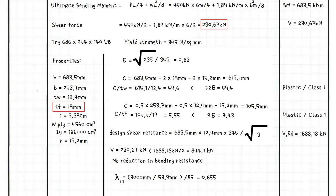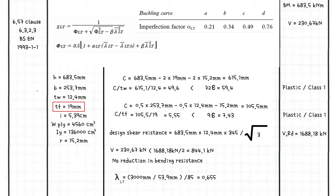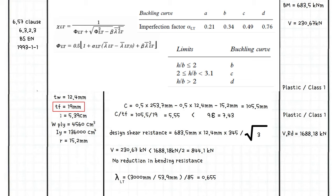As the non-dimensional slenderness is established, the value of reduction factor chi-Lt is determined using equation 6.57 of Clause 6.3.2.3 of BS 1993. Alpha-Lt is the imperfection factor and is found in Table 6.3 of BS 1993, which reads against the steel beam's buckling curve. The buckling curves are labeled A to D and can be found in Clause National Annex 2.17. The buckling curve is dependent upon the H-B ratio of the beam section.